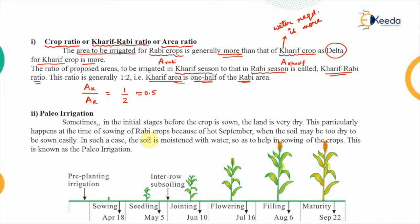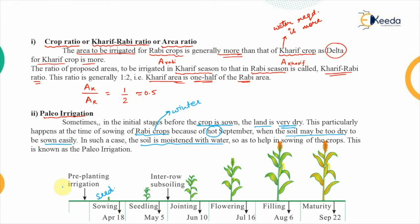The next term is paleo irrigation. As we have seen in the growth stages of a crop, at the stage of sowing — when the seed is laid out — sometimes in these initial stages, the land to be used is very dry. This problem is common in the case of rabi crops, because rabi crops are grown in winter, usually starting in October or at the end of September. September is usually a hot month and because of that the soil becomes too dry to be sown easily.